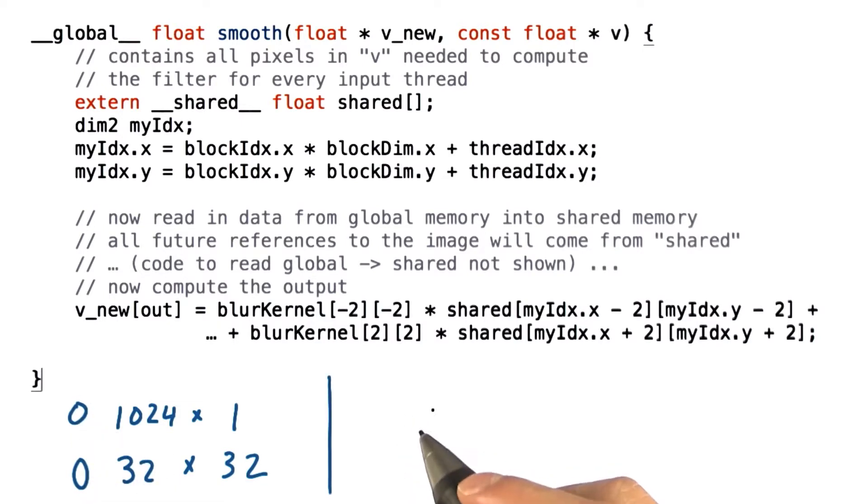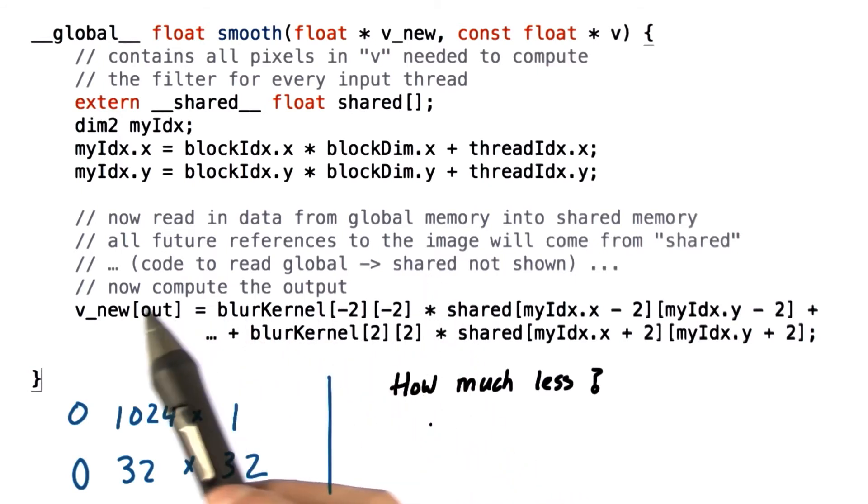And the second question is, how much less? What is the ratio of global memory bandwidth between the kernel that uses more memory bandwidth and the kernel with less? In your calculation, please ignore the bandwidth required for the blur kernel and the bandwidth required for write back of v_new. And please enter your answer here.